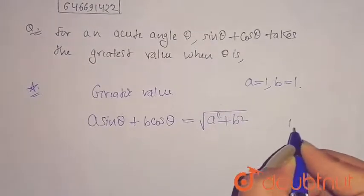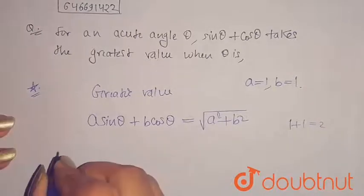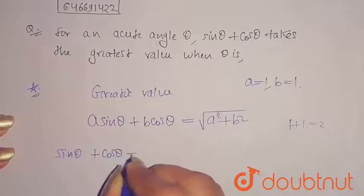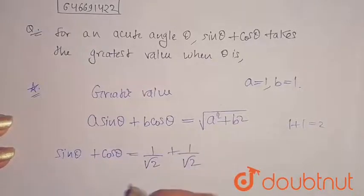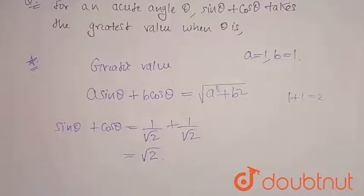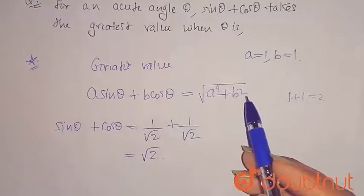When you add one plus one, that will give you two. But when you add sine theta plus cos theta equals to one by root two plus one by root two, you are getting root two here. It means here basically I have one, one, so when you add these values you will get root two only.